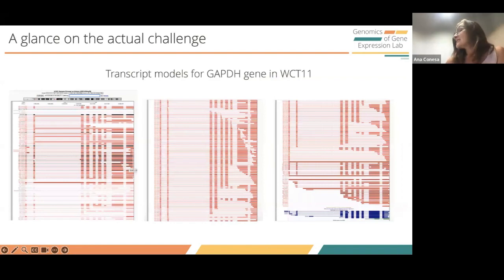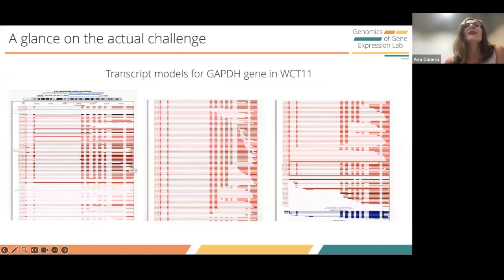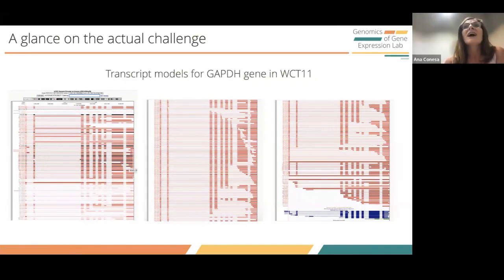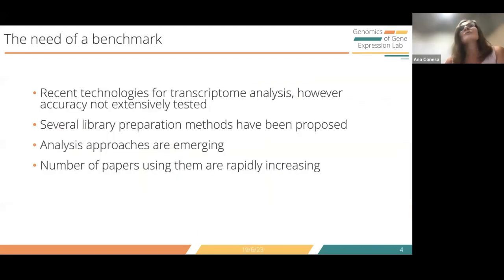Here you have a representation of long-reads data obtained from different technologies from the LongGASP project, showing the diversity of transcript models that can be sequenced from one particular gene. The genome annotation of this gene in GENCODE shows six different isoforms, and in red you have the diversity of isoforms found with long-reads methods. The question is: are all these structures real or not? This is what we were trying to answer, and it was clear that a benchmark was necessary.